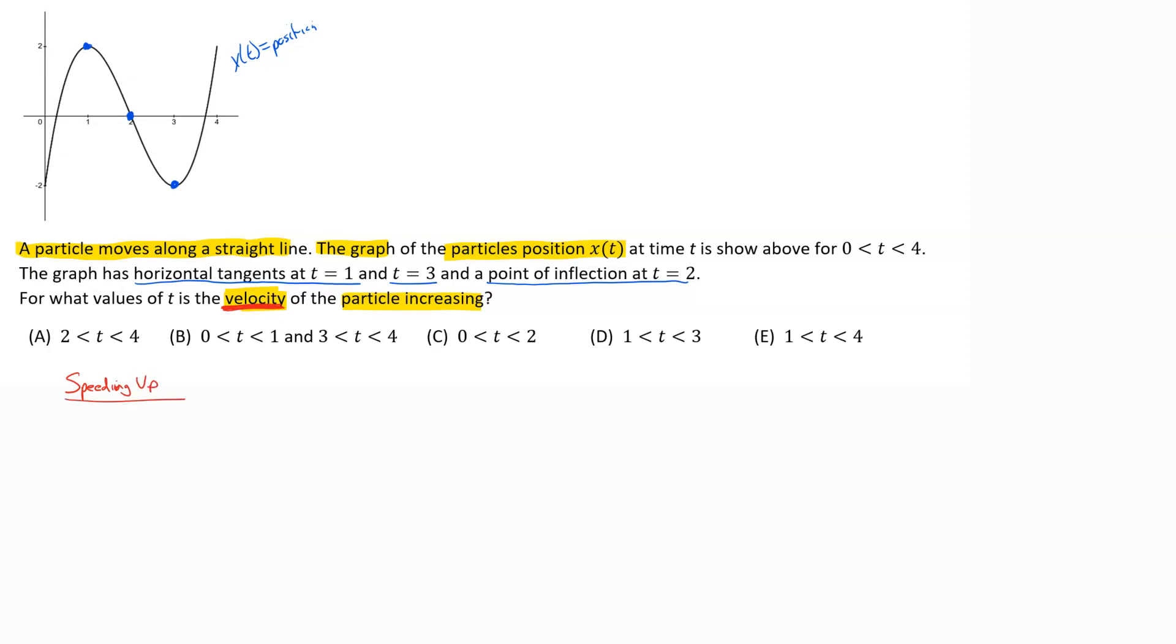Remember that when you're talking about speed, speed is the absolute value of velocity. So that's something different than velocity. The speeding up, slowing down is usually when your first derivative and second derivative are both negative or both positive - that told you that the thing was speeding up.